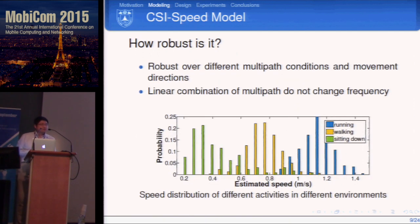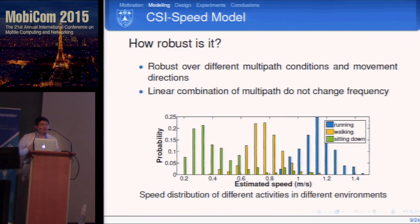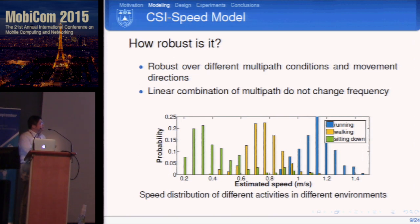Our model is quite robust because in different environments, when multipath conditions change, linear combinations of signals do not introduce new frequency components. We conducted experiments across different environments, movement directions, and persons for three activities. The measured speeds form three clear clusters: sitting down is very slow, walking is in the middle, and running is the fastest.